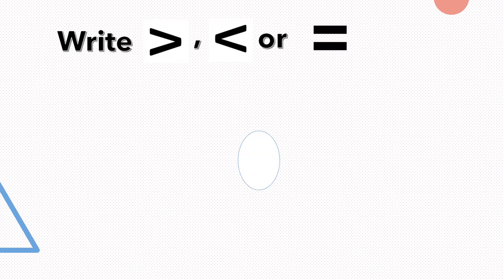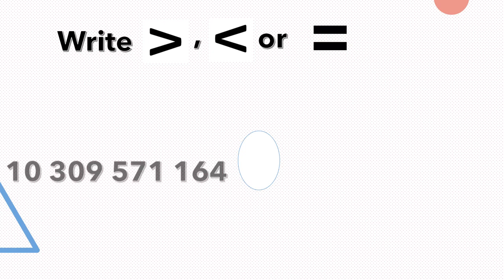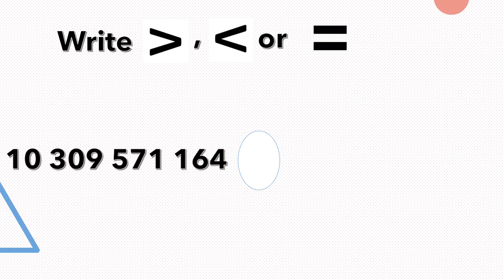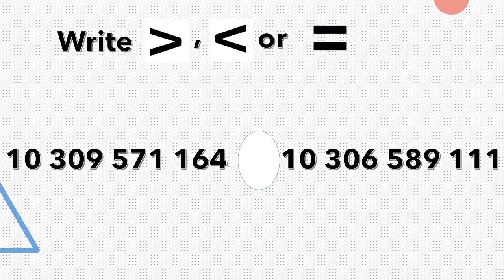Write the greater than, less than, or equal to sign to compare: 10,309,571,164 and 10,306,589,111. The larger number is 10,309,571,164, so we place the greater than sign with its opening facing that larger number.